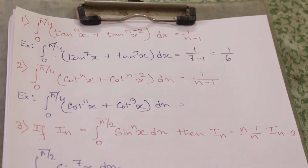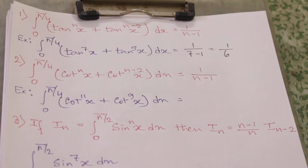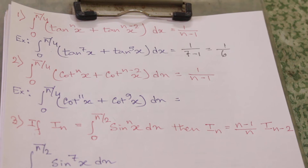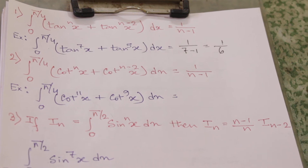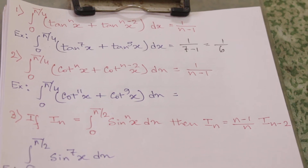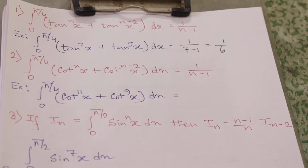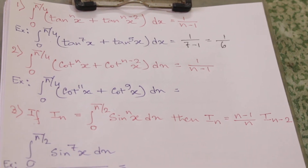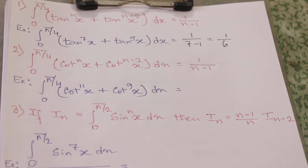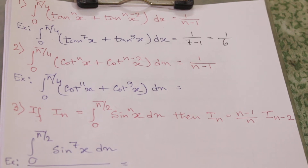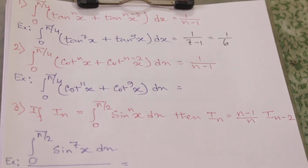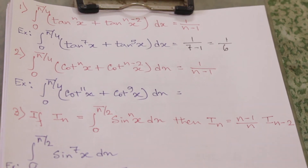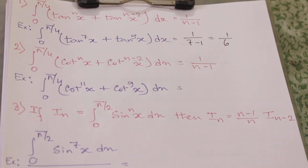Shortcut number two: the integral from 0 to π/4 of cot^n(x) + cot^(n-2)(x) dx. Its value will be the same as the last one, that is 1/(n-1).